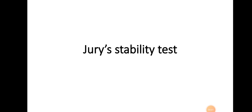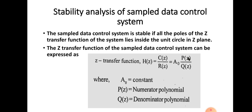In this session, we are going to discuss Jury's stability test. First of all, we will analyze the stability of the sample data control system. In the case of a sample data control system, the system is said to be stable if all the poles of the Z transfer function of the system lie inside the unity circle in the Z-plane.